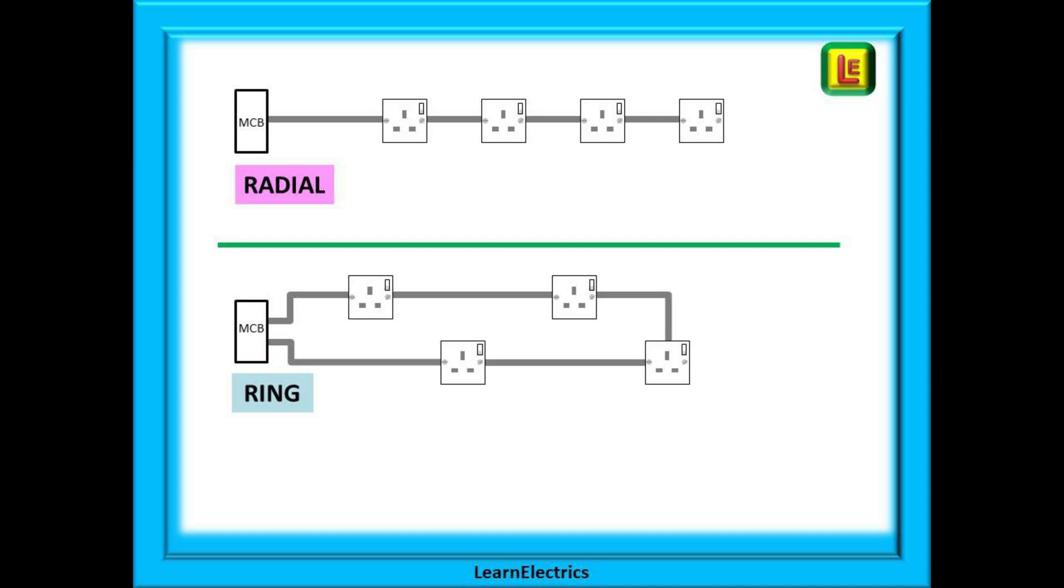With a ring circuit a cable leaves the breaker and visits each socket in turn. After the last socket the cable returns to the breaker making itself into a ring. There are two routes for the electricity to flow.